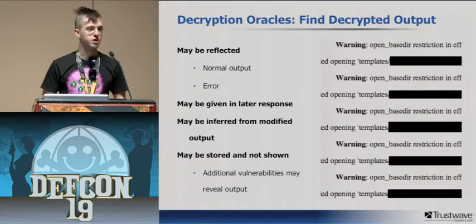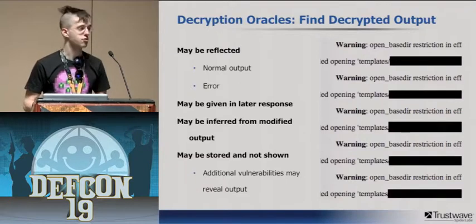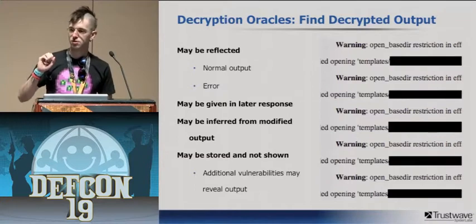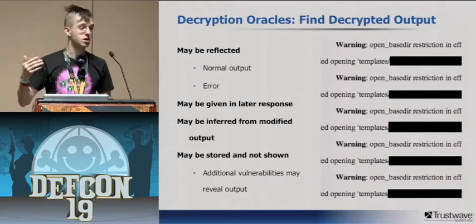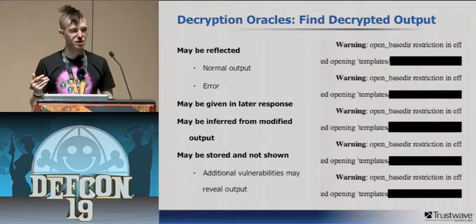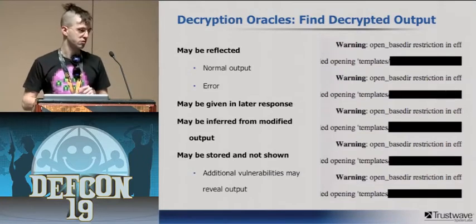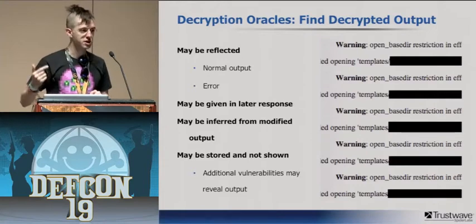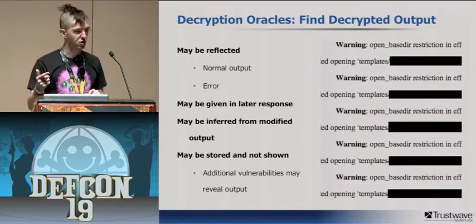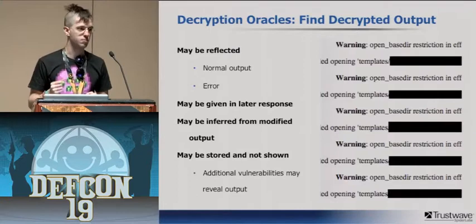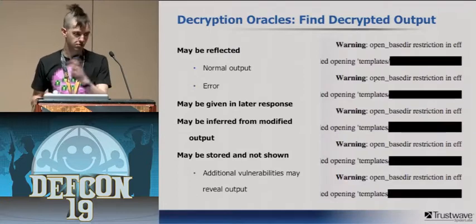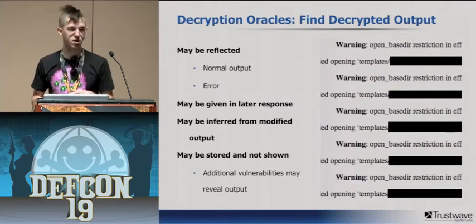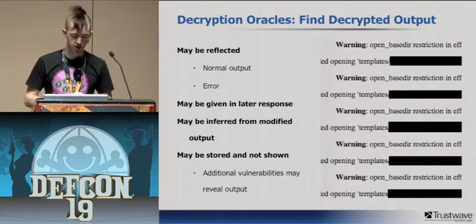One example of where you might find an encryption oracle is through an SQL injection flaw. If you find an SQL injection flaw, you can find some encrypted data in the database. If passwords are encrypted in the database, you can change your password repeatedly and use the SQL injection flaw to look at what your encrypted password has become each time — allowing you to use it as an encryption oracle.